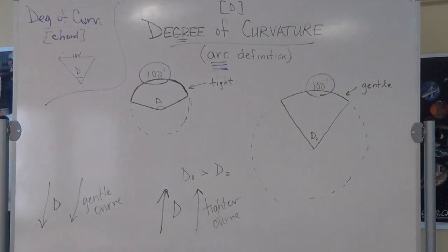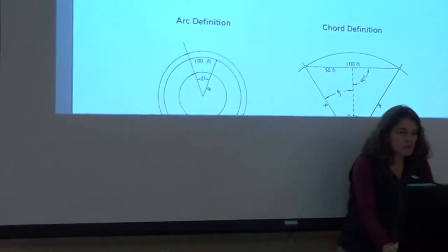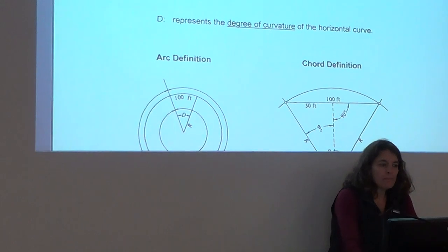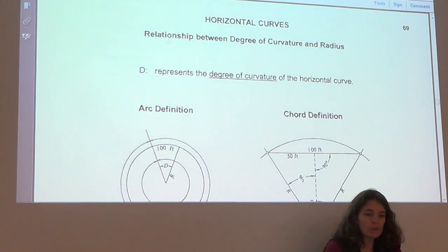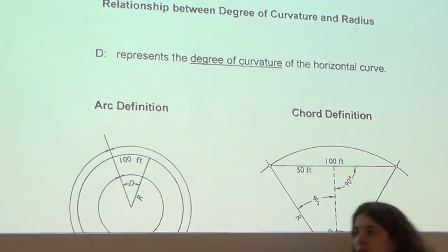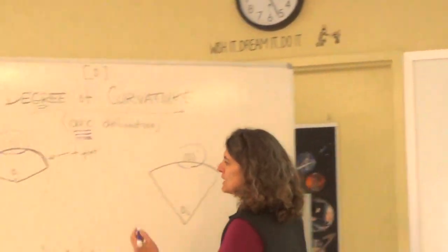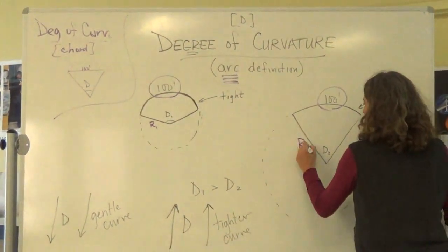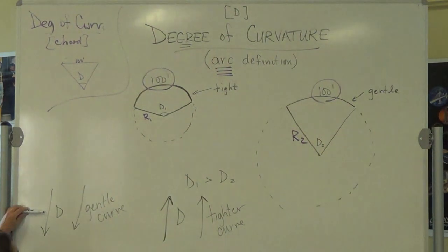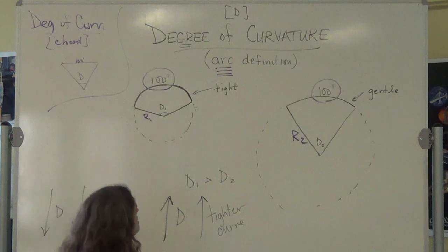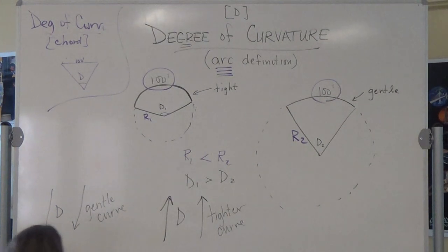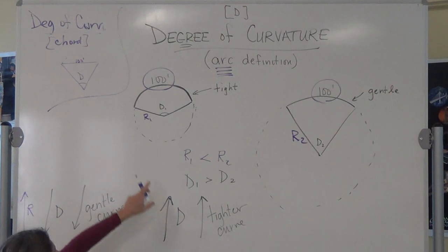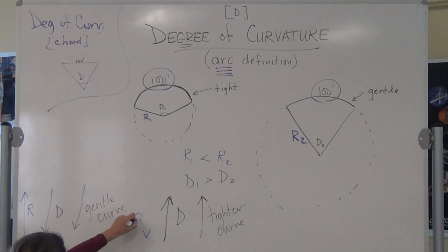Now let's look at page 69 of the packet, which covers horizontal curves — circular curves — and the relationship between the degree of curvature and the radius. This is radius 1 and this is radius 2. We said D1 is greater than D2. What about R1 versus R2? R2 is greater. So as the degree of curvature decreases, the radius increases, and the curve is more gentle. As the degree of curvature increases, the radius decreases, and the curve is tighter.